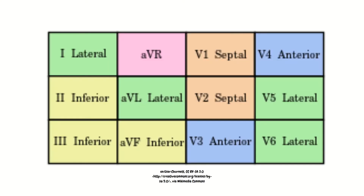Now let's go into what we mean by consecutive leads. Each part of the ECG corresponds to a specific part of the heart. For example, leads II, III, and AVF are looking at the inferior part of the heart. V5, V6, lead I, and AVL are looking at the lateral part of the heart. It's important to know this because it allows us to figure out which part of the heart is ischemic and undergoing damage, and it helps us figure out which coronary arteries are involved, since certain coronary arteries supply certain parts of the heart.